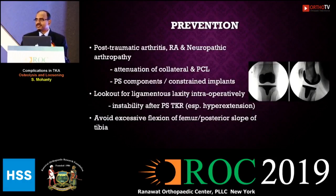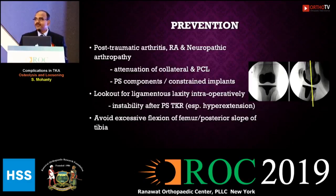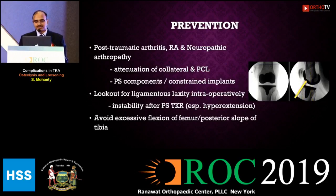To prevent osteolysis: post-traumatic arthritis, rheumatoid, and neuropathic arthropathy lead to more osteolysis due to attenuation of collateral and posterior cruciate ligaments — use more constrained implants like PS. Look out for ligamentous laxity intraoperatively, especially in PS implants, as hyperextension may lead to polyethylene impingement. Avoid excessive flexion of the femoral component or increased posterior slope of the tibial component.